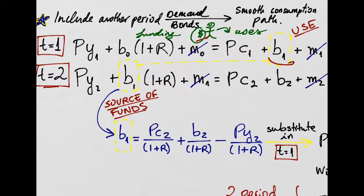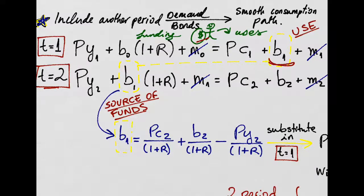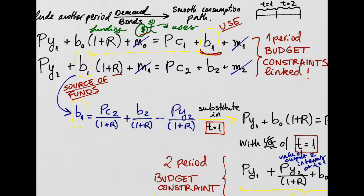these bonds you're lending today will be the sources of funds of tomorrow, because they will be paid back to you, plus some interest. So B1 is the link between the two period budget constraints.